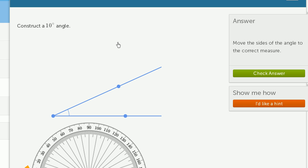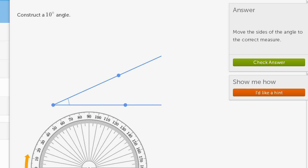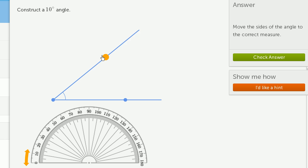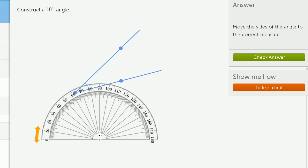We're asked to construct a 10-degree angle. So they give us this little angle tool here that we can use to construct an angle. So just like that, and then we give us a protractor to actually measure the angle. So let's set it up.